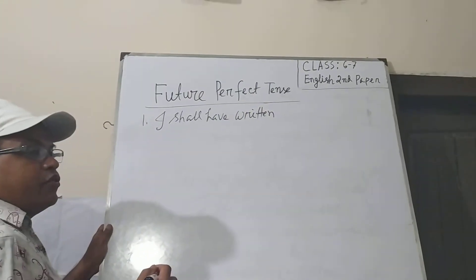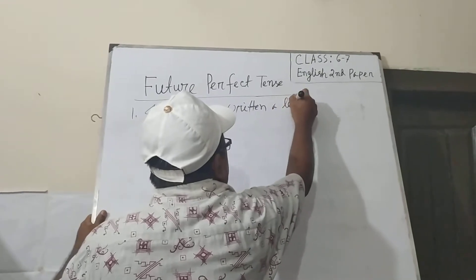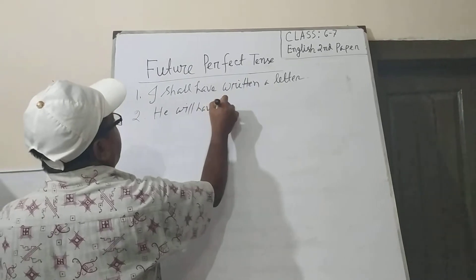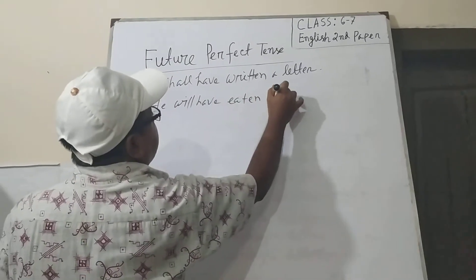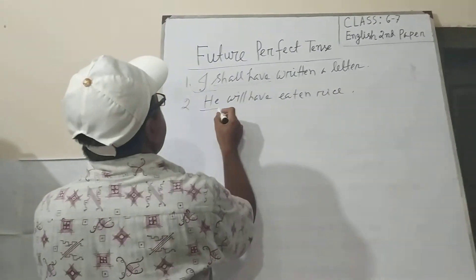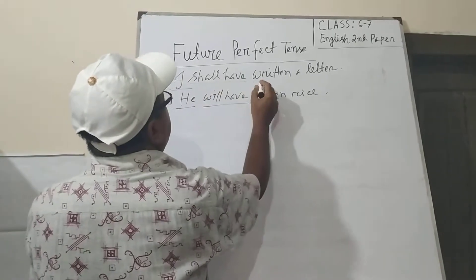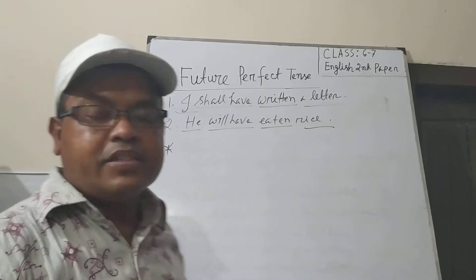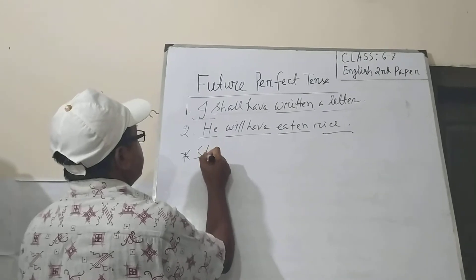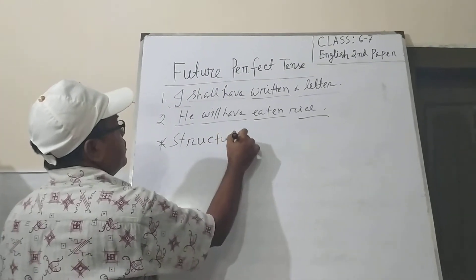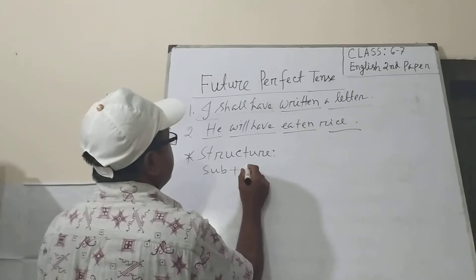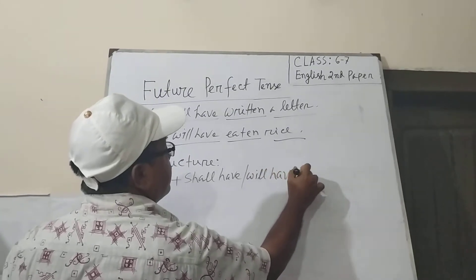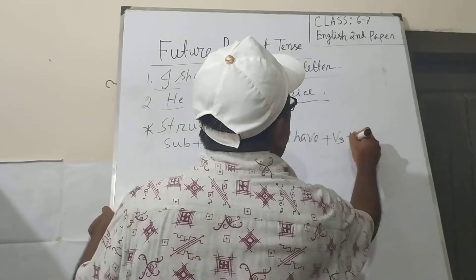In case of future perfect tense, the structure will be: subject, then 'shall have' or 'will have', then the past participle (verb third form), then object.